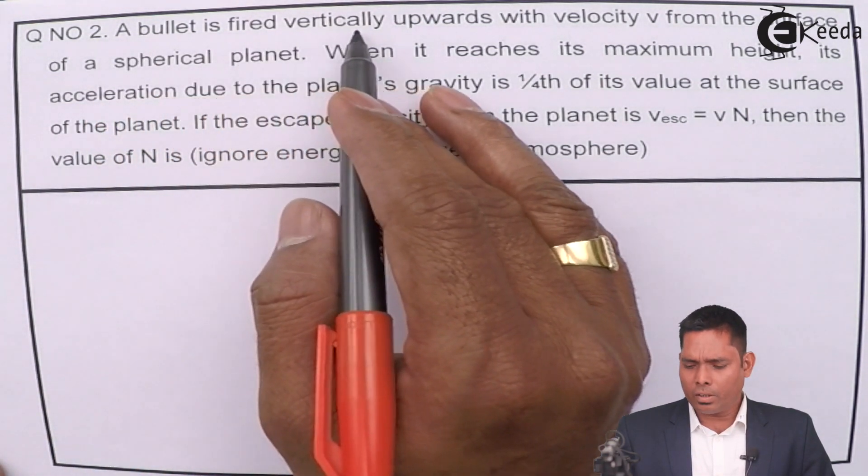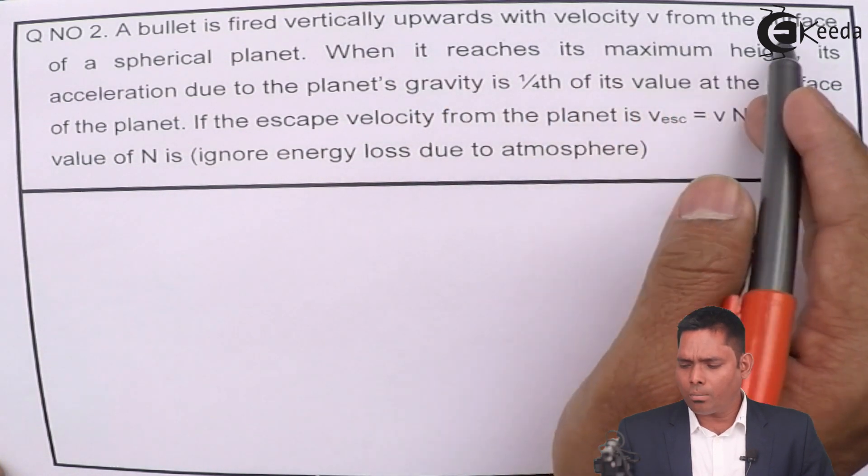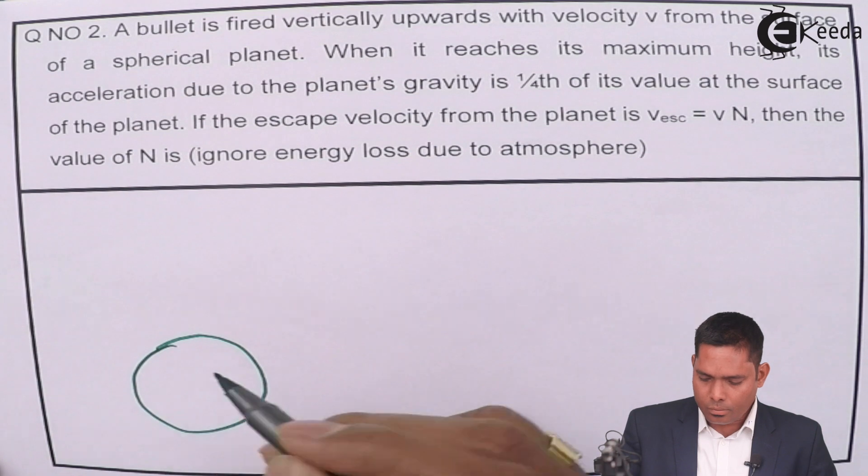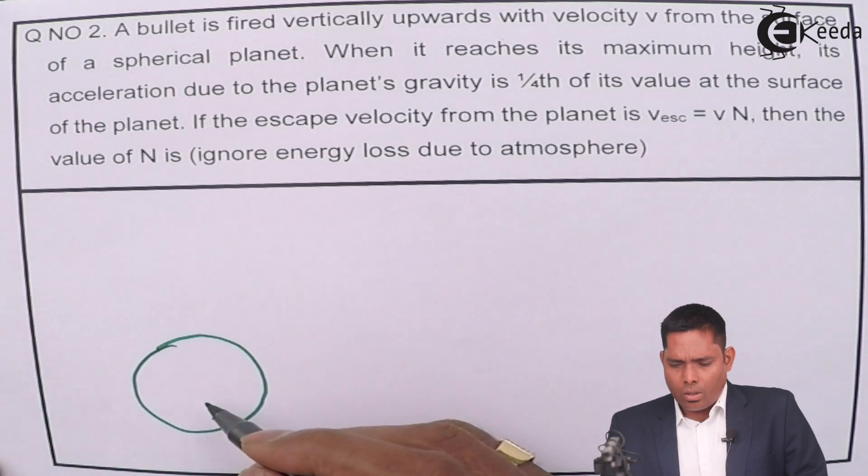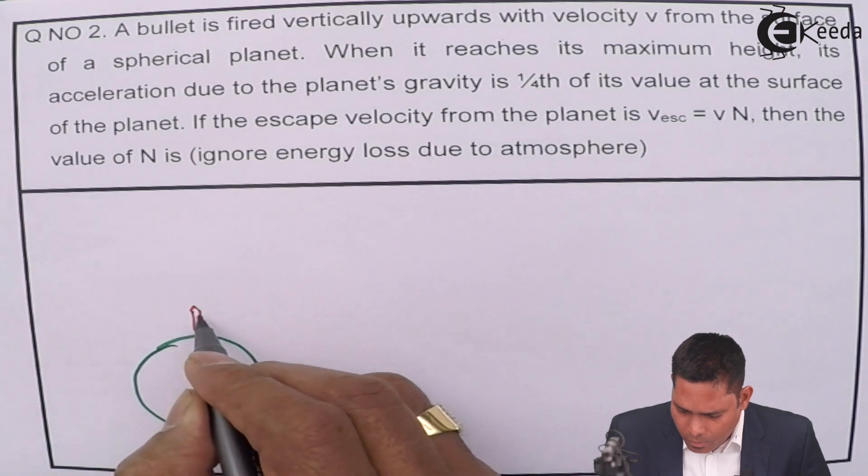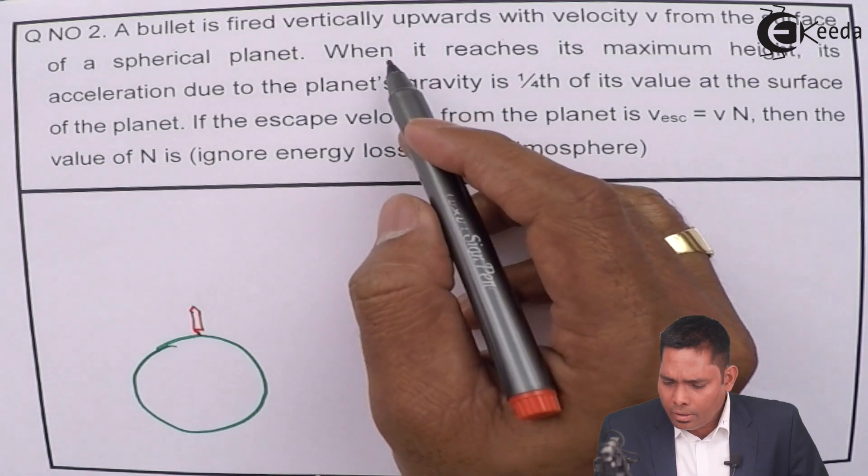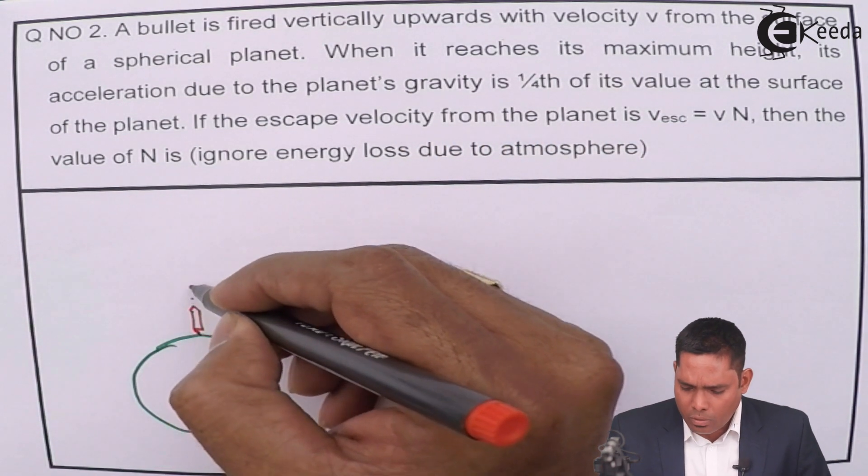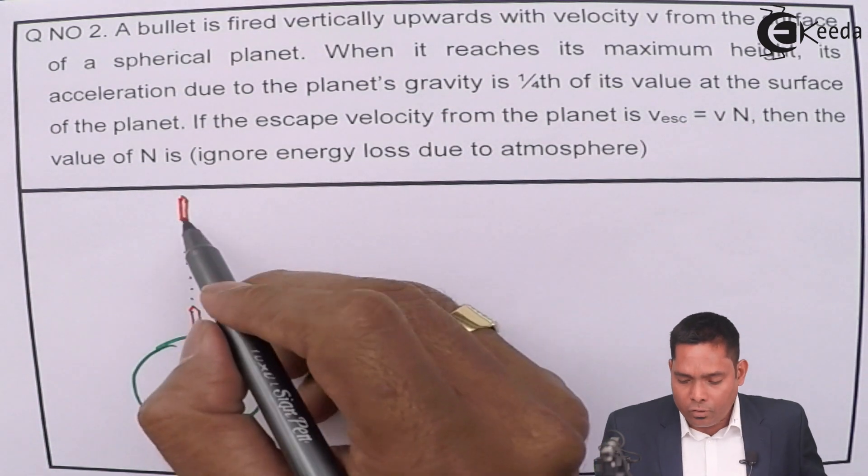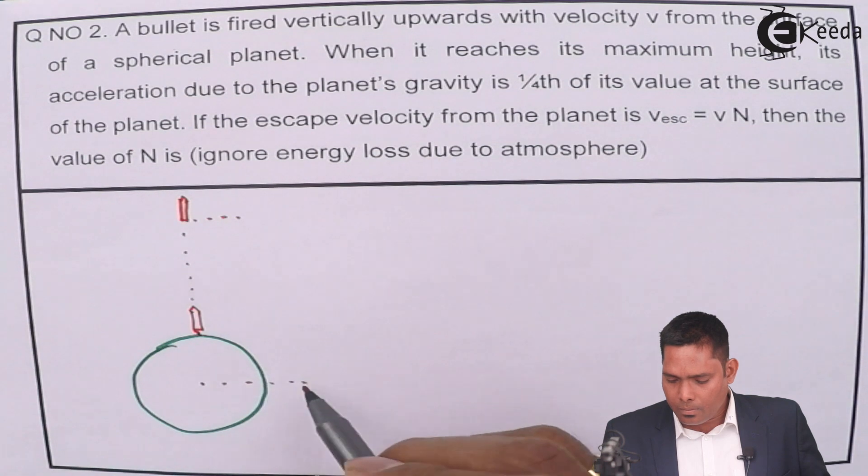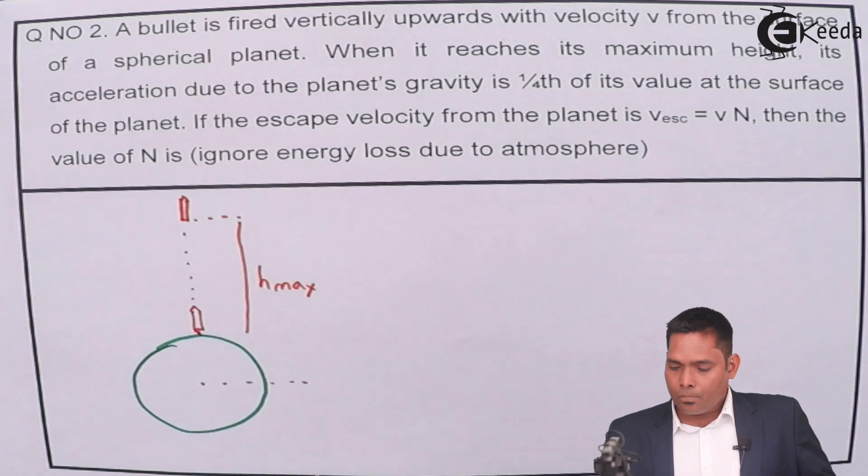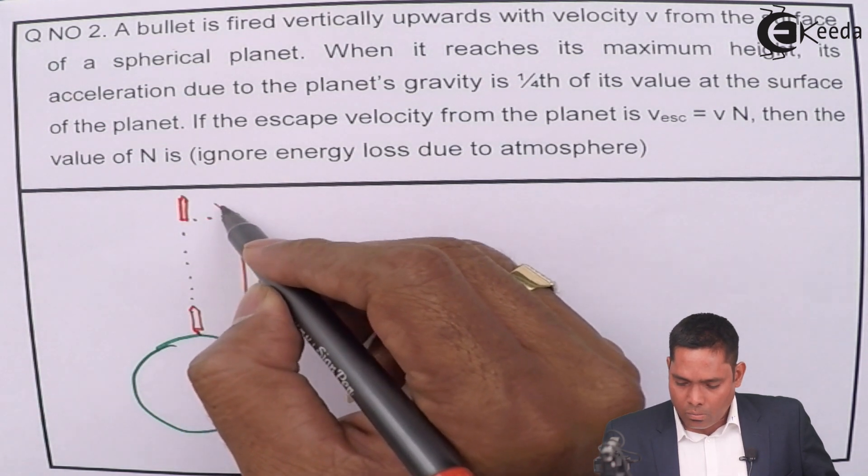The question says, a bullet is fired vertically upward with velocity V from the surface of a spherical planet. This is a spherical planet and a bullet is fired. The bullet reaches its maximum height. This is the maximum height that it reaches, and obviously at this point its velocity will be zero.